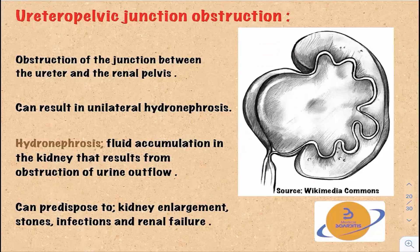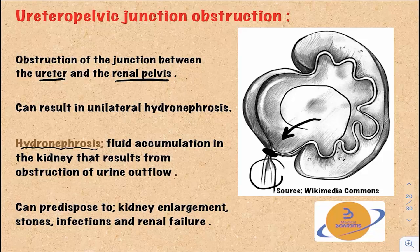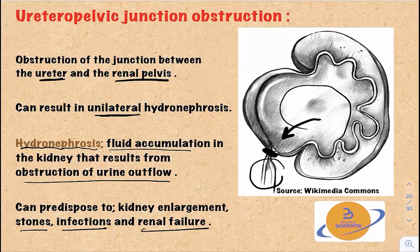Next is uretero-pelvic junction obstruction. This is an obstruction between the ureter and the renal pelvis that prevents urine outflow from the renal pelvis into the ureter. This fluid accumulation results in hydronephrosis, which means fluid accumulation in the kidney from obstruction of urinary outflow. Most cases are unilateral. This obstruction can predispose to kidney enlargement, stones, infections, and renal failure. The uretero-pelvic junction is the last place to canalize during development and is therefore very liable to obstruction.